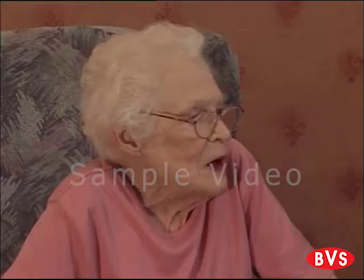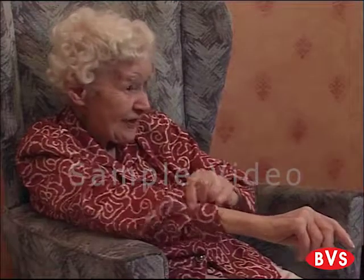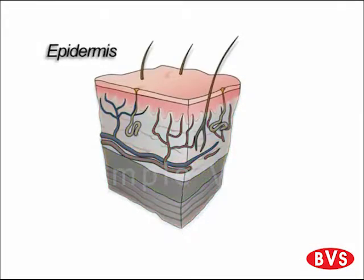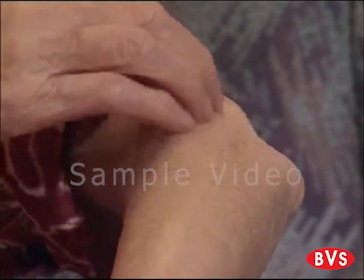Let us start by looking at the anatomy of the skin. We need to understand the structure of the skin and its blood supply so that we can comprehend the effects of pressure on the skin. The outside layer of the skin is called the epidermis. The epidermis consists of layers of cells packed tightly together that act as a physical barrier to protect our bodies. The epidermis is continually being rubbed away by movement and clothes, but yet it replaces itself every 28 days.